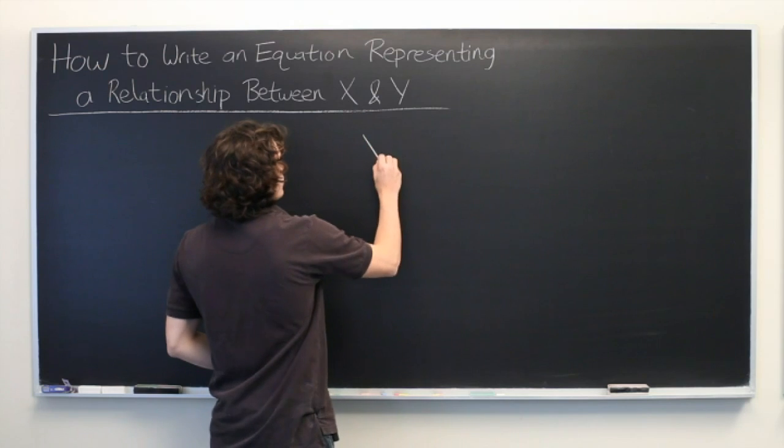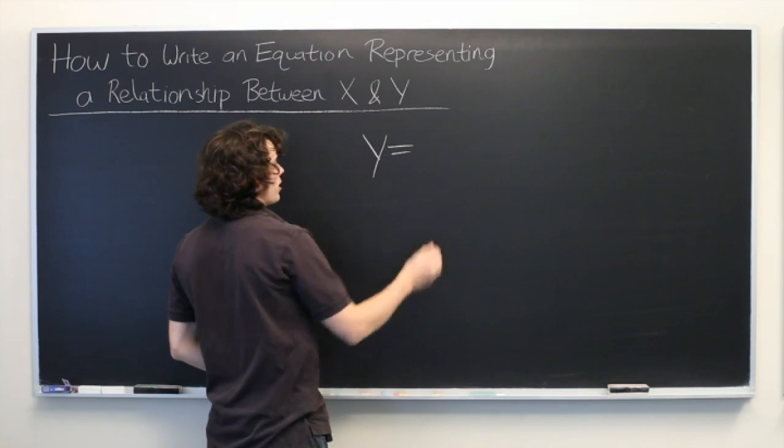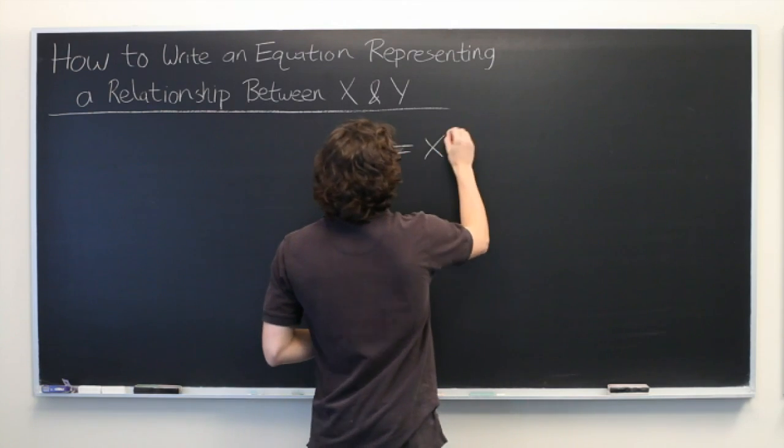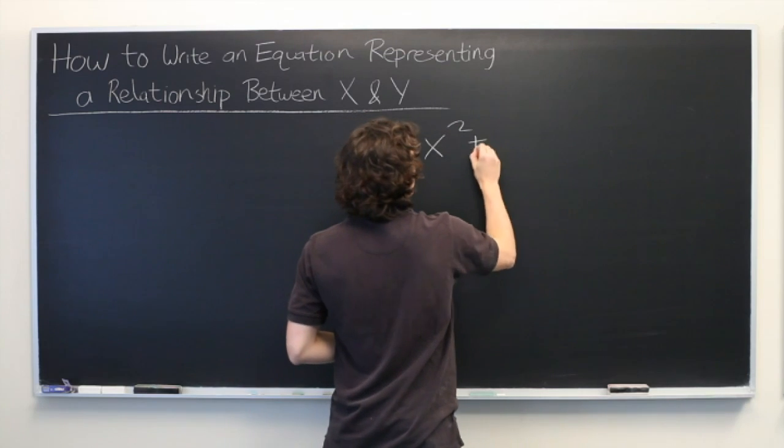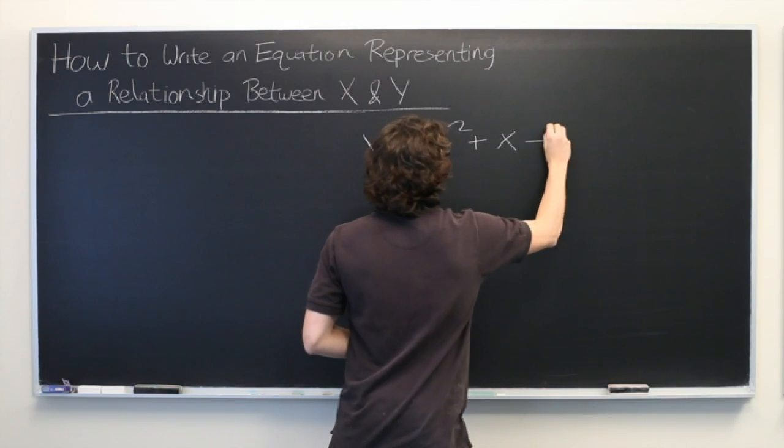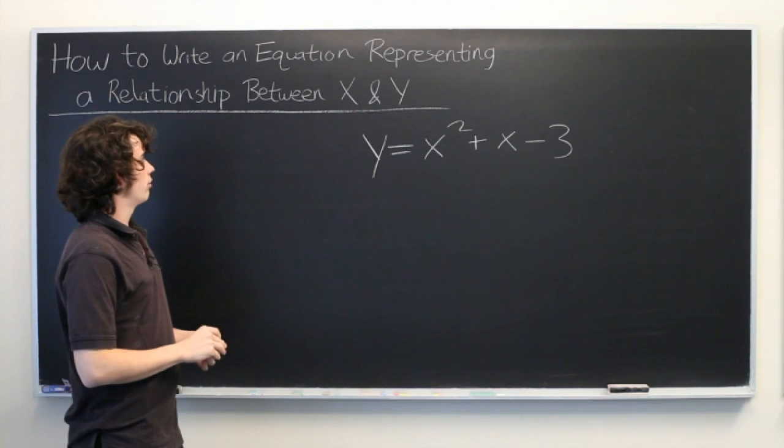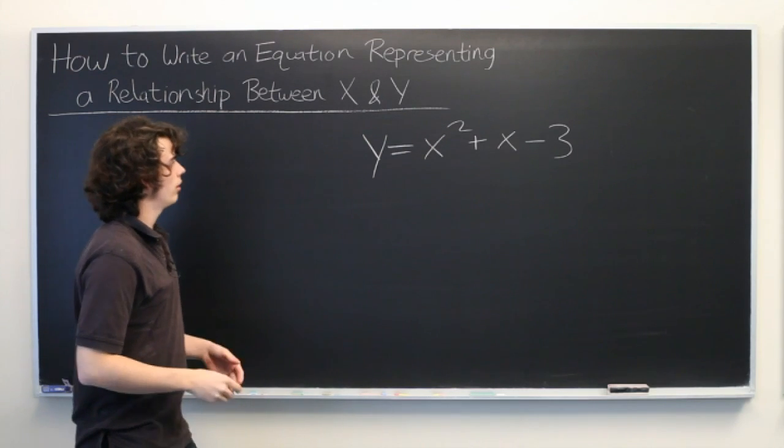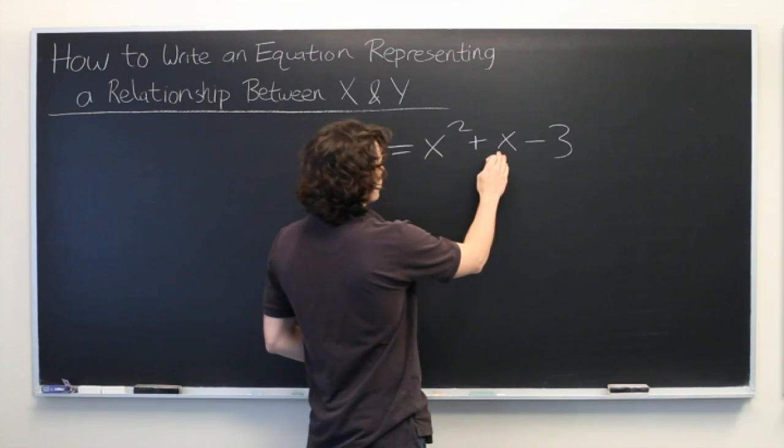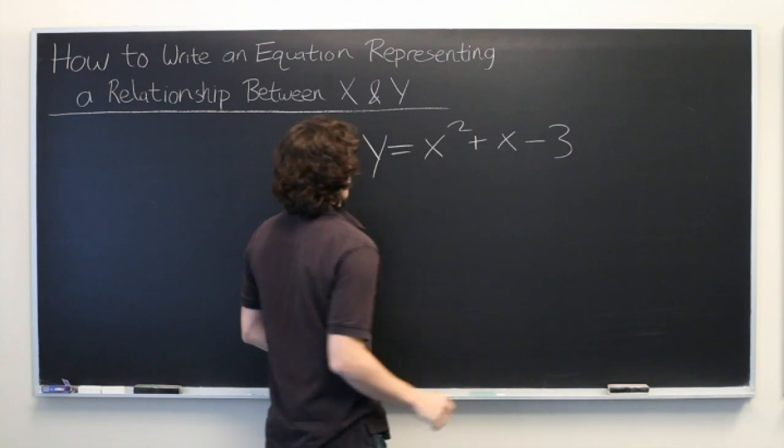So, you frequently see equations of the form y equals some function of x. It's a perfectly valid relationship between x and y. We square x, we add x to it, we subtract 3. That gives us y.